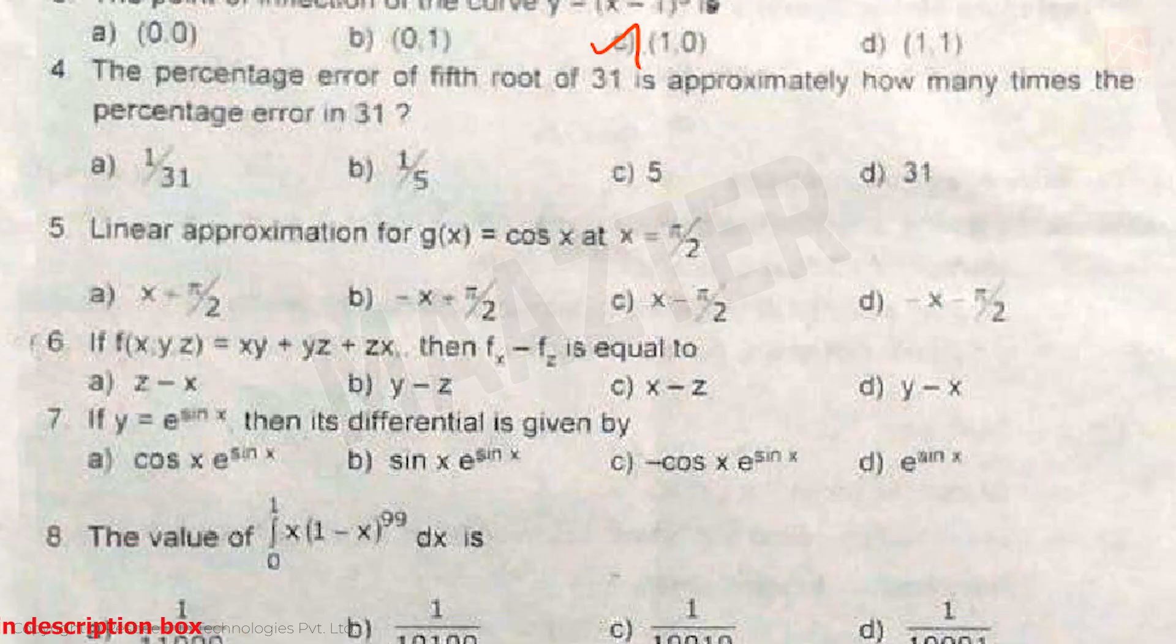Question 4: The percentage error of the fifth root of 31 is approximately how many times the percentage error in 31? Answer is option B.